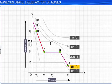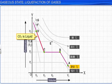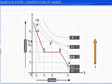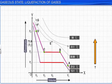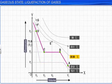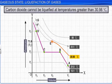When the temperature is raised further, the horizontal portion in the graph becomes smaller and smaller. And at 30.98 degrees Celsius, it is reduced to a point represented by E. This shows that above 30.98 degrees Celsius, carbon dioxide cannot be liquefied at all, no matter how great the applied pressure is.